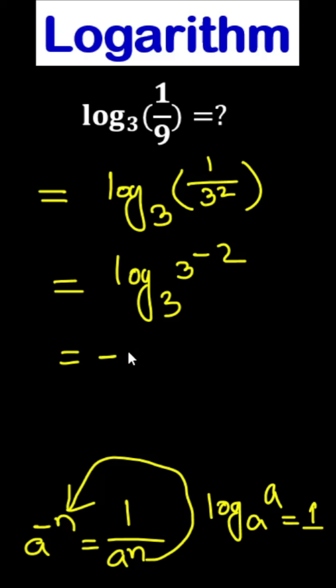So, here minus 2 become front side and here is log 3, 3. It means minus 2 times log 3 base 3, it means 1.